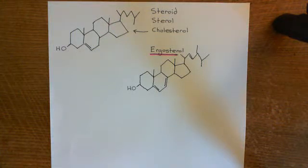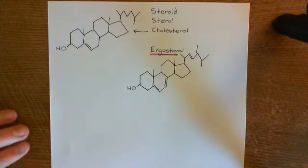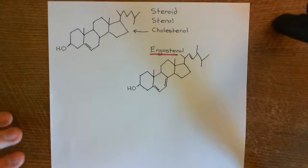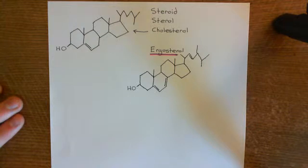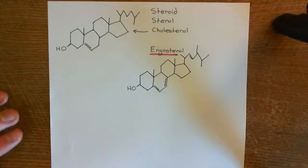Welcome to this next video in which we are discussing the anthrax toxin. We've now discussed what a lipid raft is — it's a place in the plasma membrane where you have an unusual lipid composition. Instead of having glycerolipids, such as phospholipids, triglycerides, diglycerides, and monoglycerides, you instead have a lot of glycosphingolipids, specifically gangliosides, cholesterol molecules, and also ergosterol molecules.